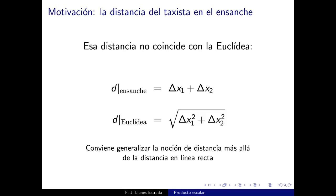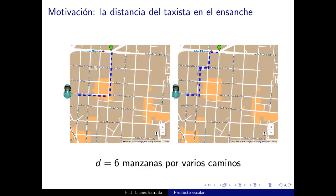Un pájaro podría volar en línea recta cubriendo la distancia euclídea, pero una persona caminando no puede, por los bloques de edificios que hay en medio. Vista esta distancia que hay que recorrer en la cuadrícula, podemos generalizar el concepto de distancia para que no sea solo la línea recta entre dos puntos.